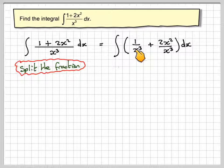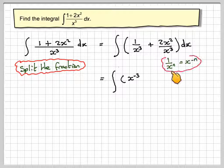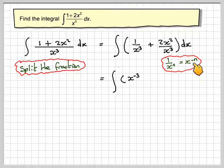Well, using the rule of indices, this becomes x^(-3), because 1/x^n is x^(-n).